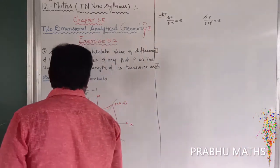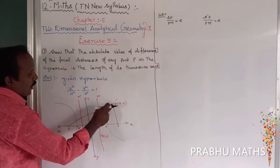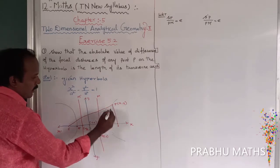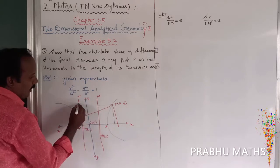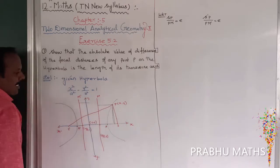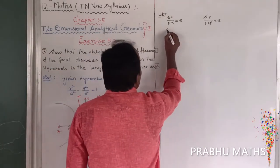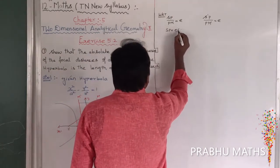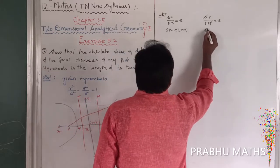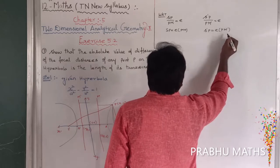That is the point — the first directrix, then second directrix. By cross multiplication: SP is equal to e into PM. Next, S dash P is equal to e into PM dash.